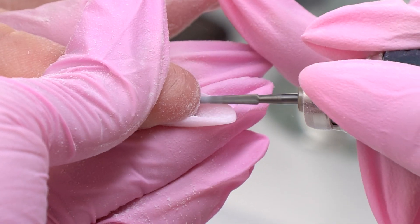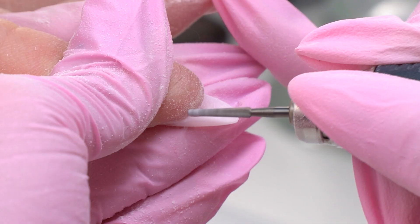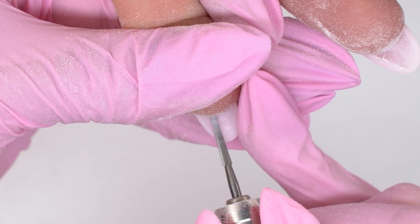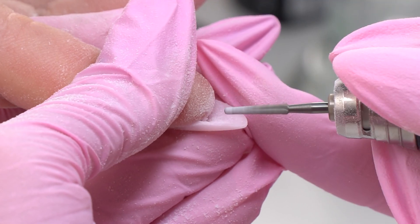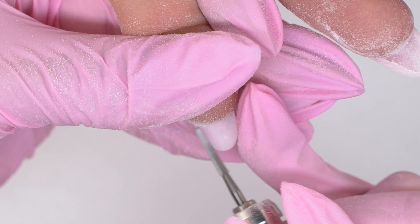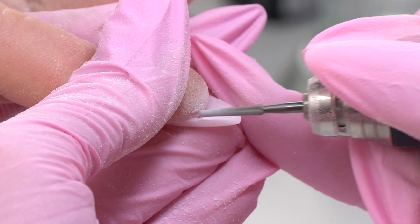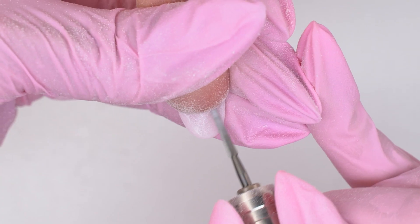I make smoothing moves in one direction. Nail sculpting with dual forms itself is pretty quick, but sometimes we need to touch it up or file it out on the inside, so the process may take as long as sculpting with paper forms.